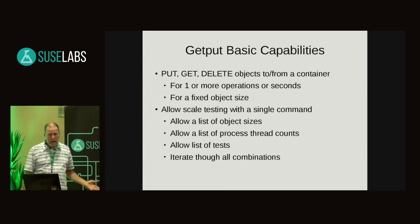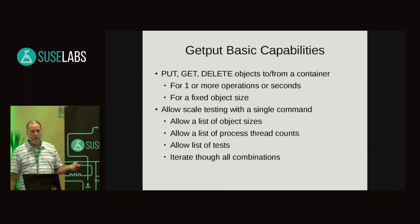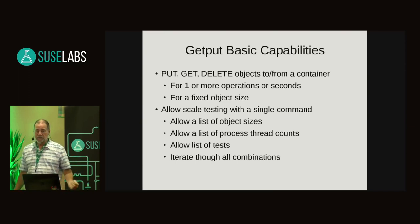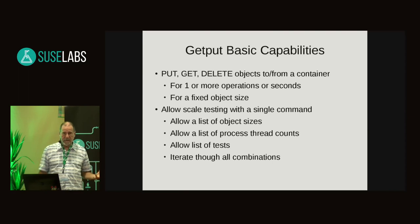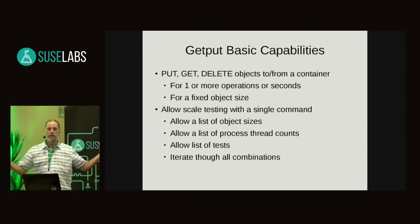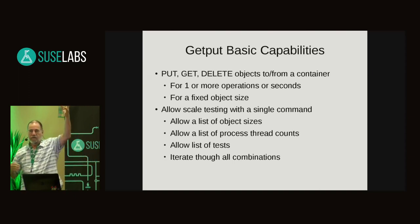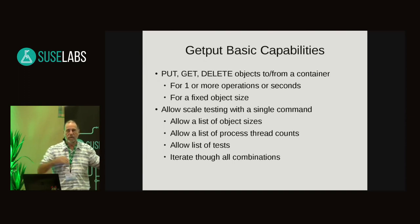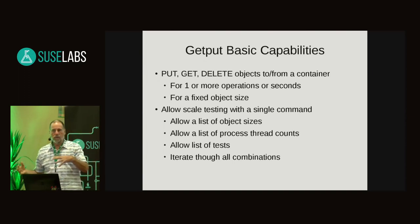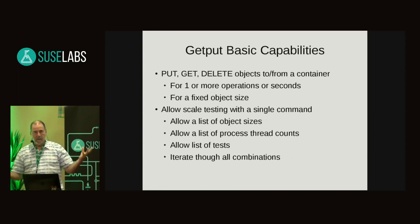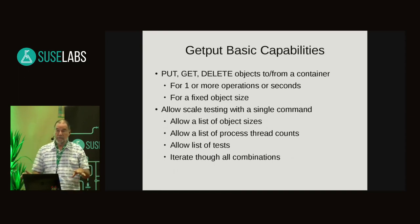When I put together GetPut, I wanted a very simple command that would do a whole lot of stuff. You can give it a list of object sizes, a list of how many threads you want to run, and a list of tests. It will iterate through all the different permutations. So you can give it one command that might run for two, three, four, or five hours and generate output on a 4K object with these IOPS, then an 8K object with this, with three threads, eight threads, twenty threads — and you wind up with this whole set of permutations from a single test.